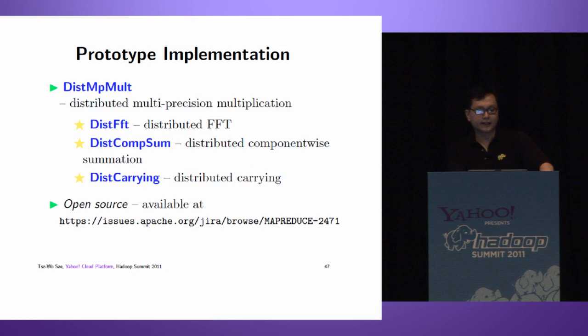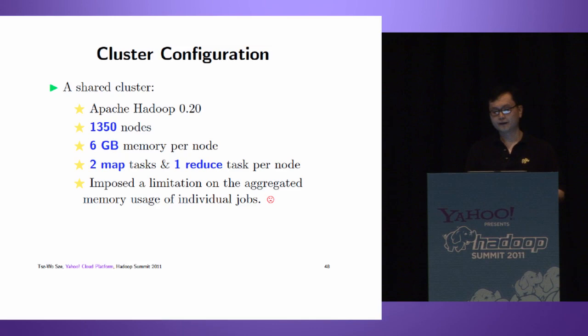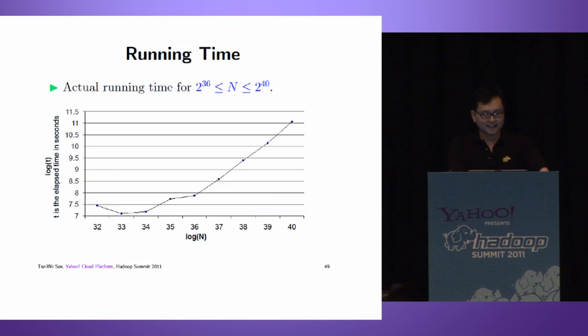We have a prototype implementation called Distributed Multi-Position Multiplication. It includes distributed FFT, distributed component-wise summation, and distributed carrying. Everything is open source, available in JIRA MapReduce-2471. If you're interested, take a look. We've done some experiments, but I may not have enough time to cover that, so let's skip these slides.